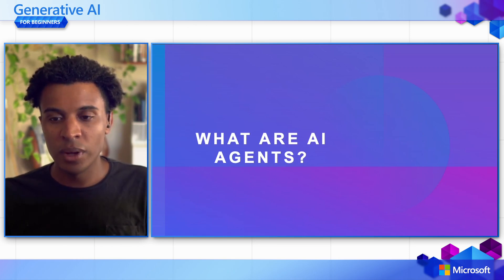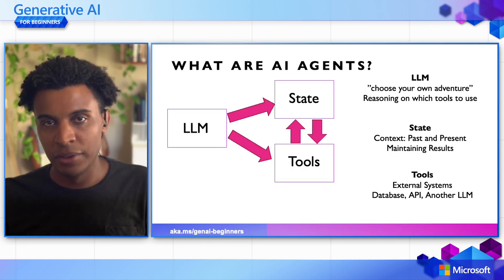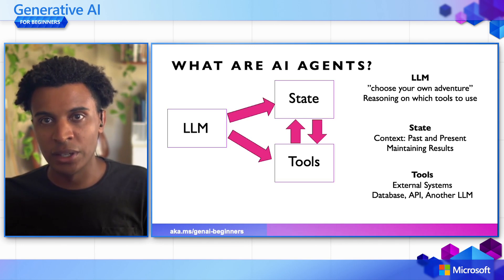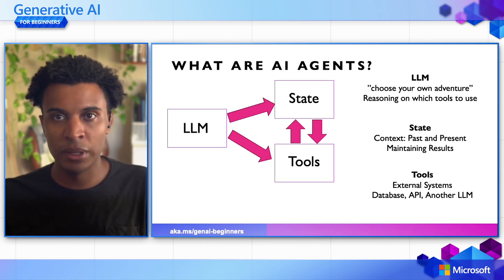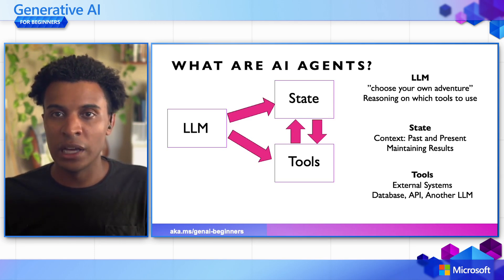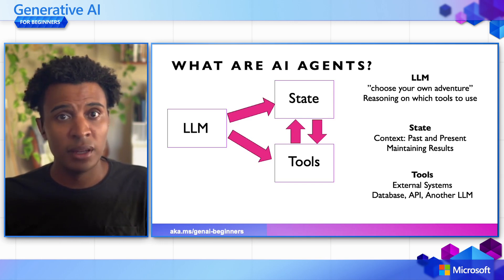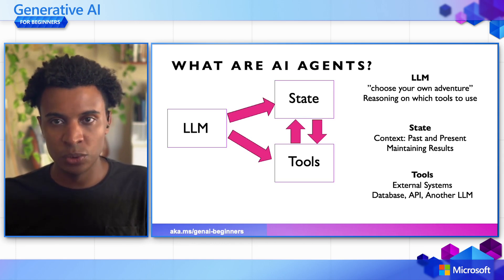So what exactly are AI agents? This is a very open definition that means a lot to different people when building applications. But to keep it general, for an AI agent to be defined, you need three things: one, a large language model; two, some sort of state; and lastly, tools.